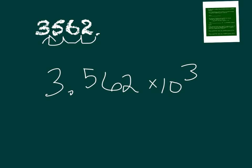Now think about this. This is a big number. This represents 1,000. So 1,000 times 3.562 gives us 3,562.